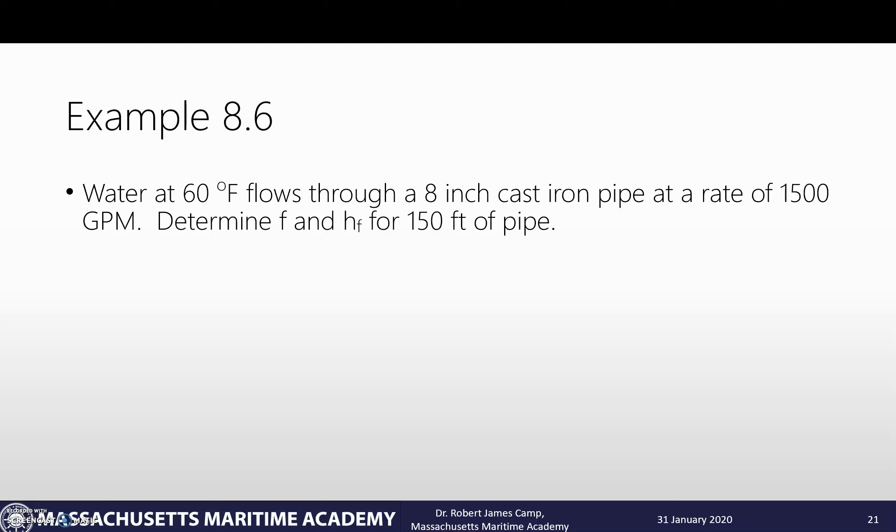Okay, so once again, we're going to be solving the Darcy-Weisbach equation, which means that we need to know what f is. So we need to figure out, is this laminar or turbulent flow? The very first thing that we need to do is calculate Reynolds number. To calculate Reynolds number, we're going to need to look up the properties of water, and we can look up kinematic viscosity as 1.21 times 10 to the negative 5th feet squared per second.